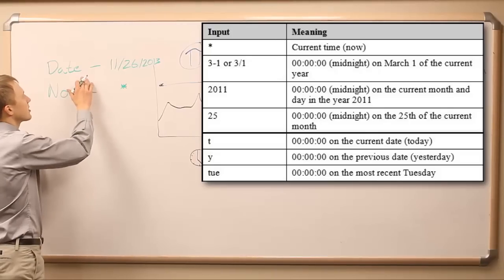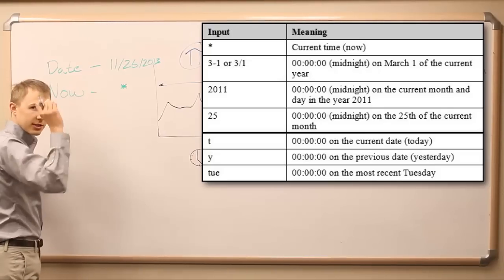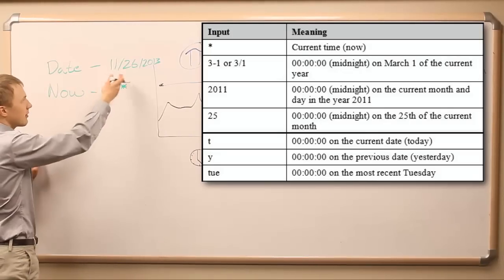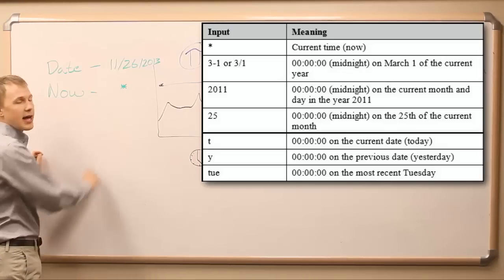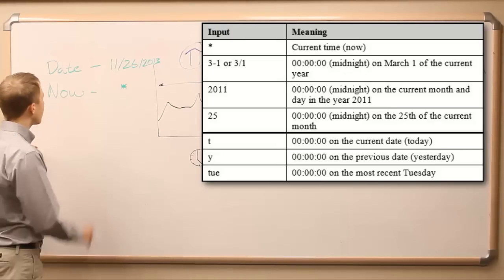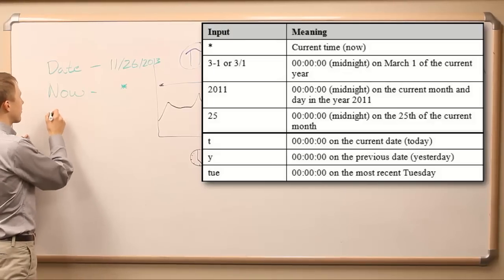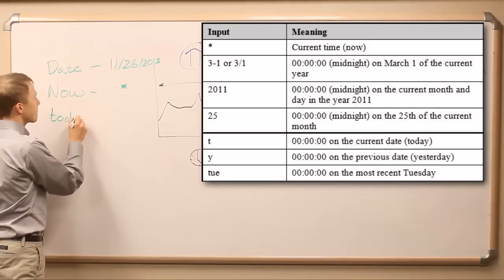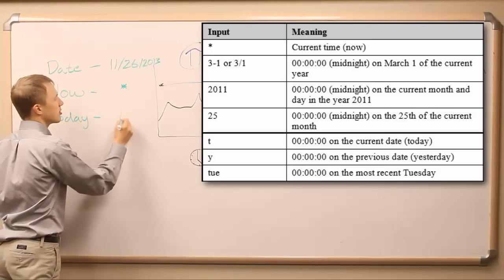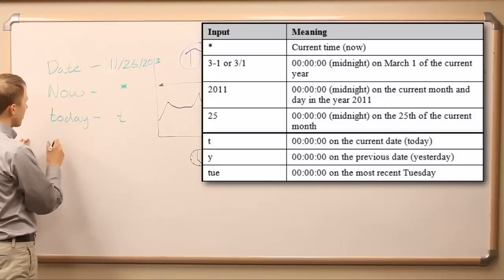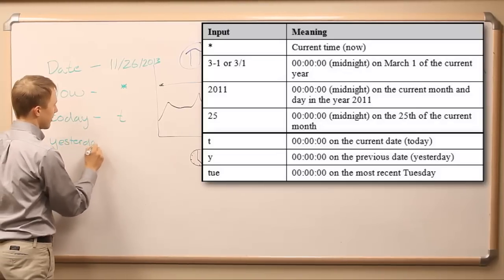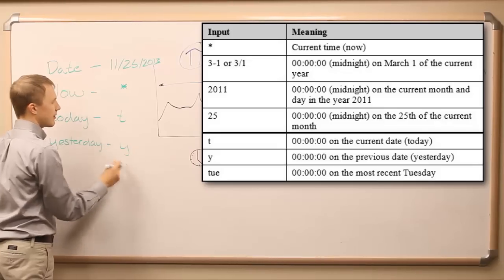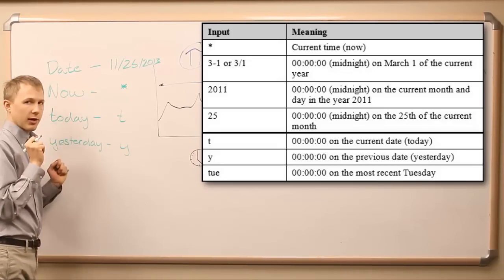Now, these refer to particular dates in time, particular spots in time. If I were to tell you 11-26-2013, you'd know what I was talking about. If I referred to right now, you'd know what I was talking about. Other things that we have in the PI System is we can refer to today, which is today, this morning at midnight. And we can also refer to yesterday. And that's Y. That's yesterday, yesterday morning at midnight.